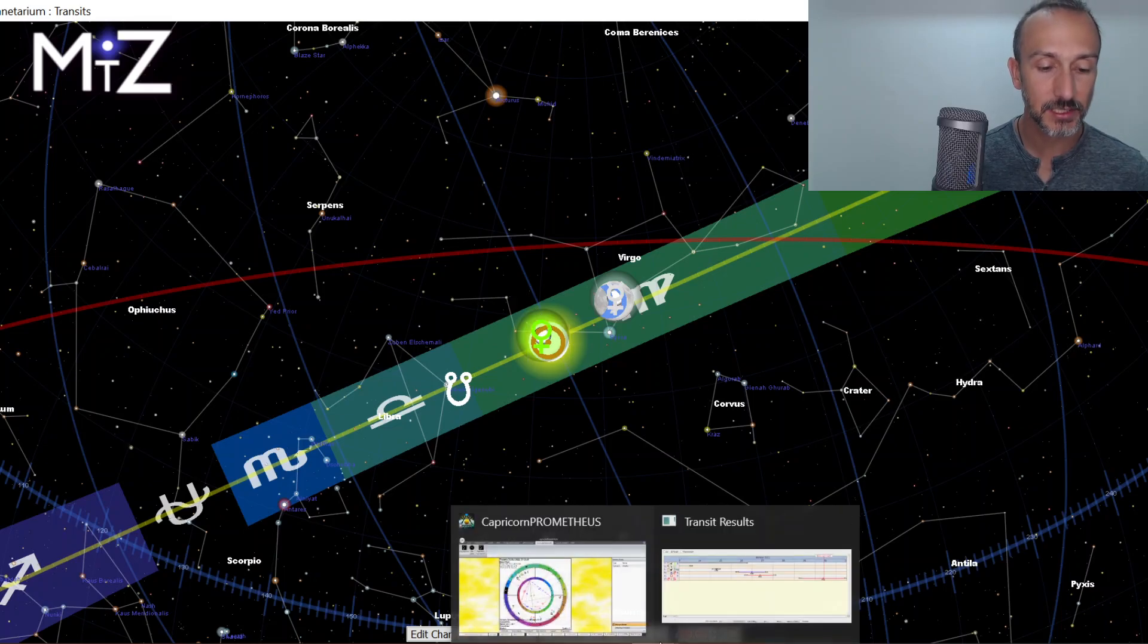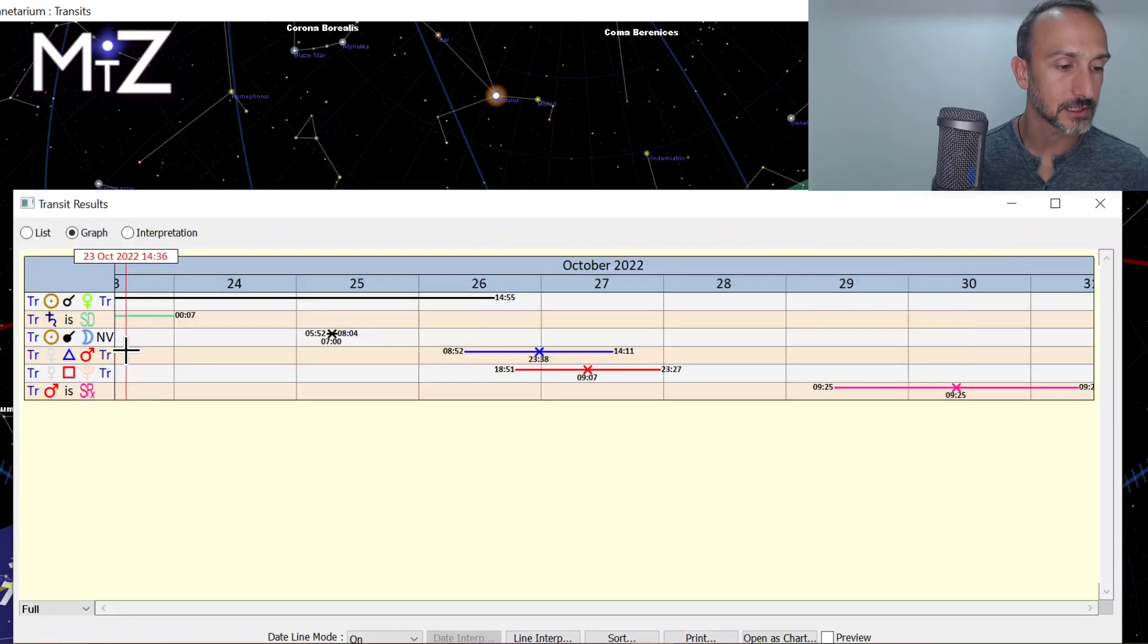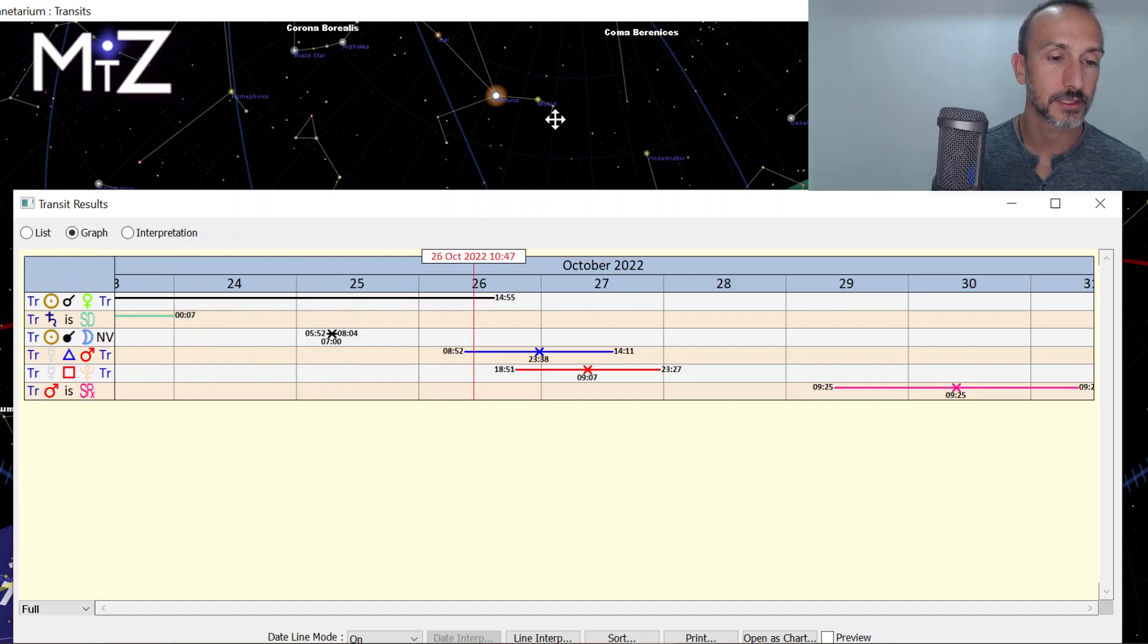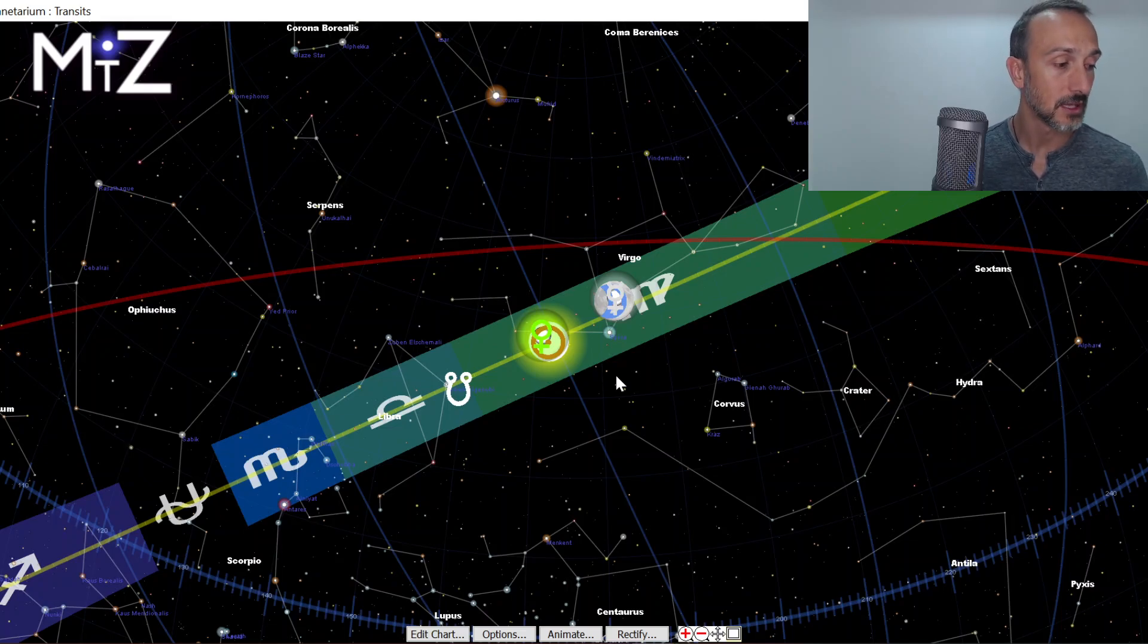Now, Venus is still very close to the sun. They conjoined late last week, but they're still within one degree orb here in the early part of the week. So there could be, the early part especially, still a focus on our values. What is it we value in life? Perhaps having a new perspective on that, perhaps some new beginnings still emerging regarding these values. And of course, the new moon on Tuesday will activate that as well.